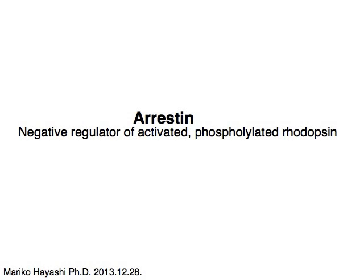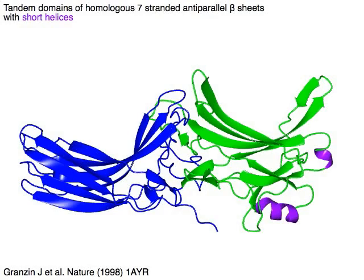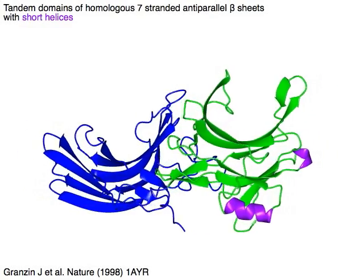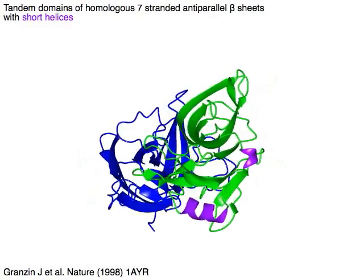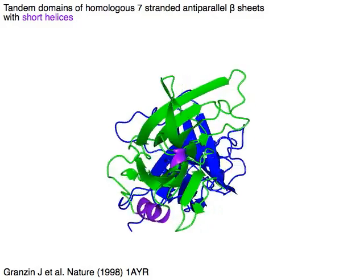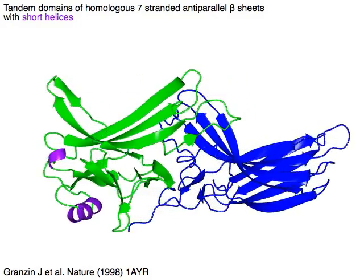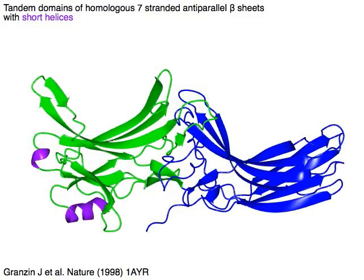Arrestin, negative regulator of activated phospho-related rhodopsin. Arrestin consists of tandem domains of homologous seven-stranded anti-parallel beta sheets in green and blue, with short helices in purple.